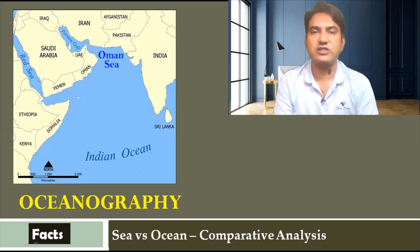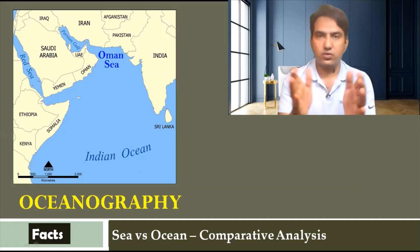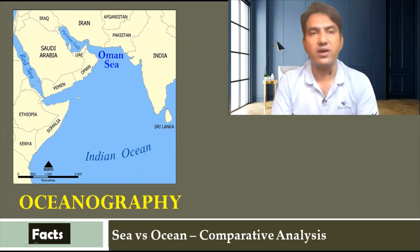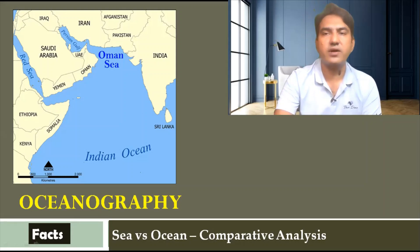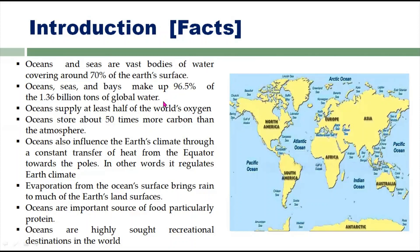Today we will see the difference: which are the oceans, which are the seas, where they are located, and how many oceans and seas are present in the world. This video is going to be short to save your time. Now, before going into the differences, let's cover some facts. Oceans and seas are vast bodies of water covering around 70 percent of the Earth's surface.